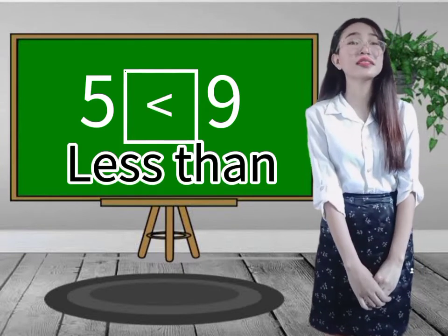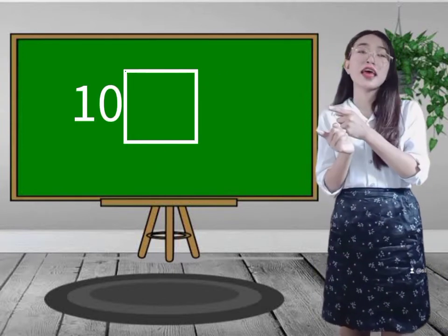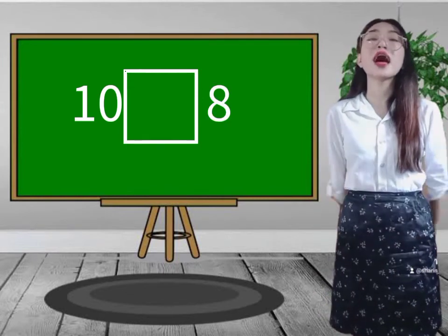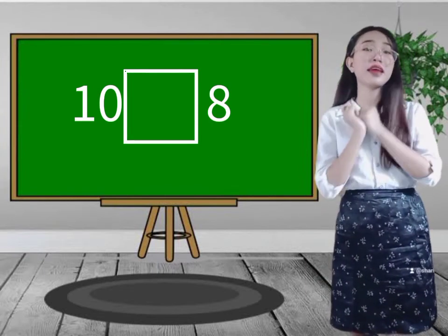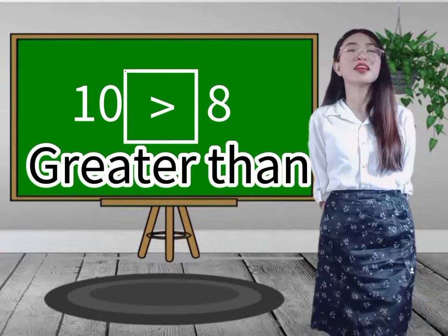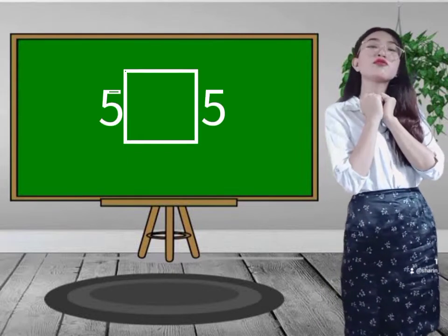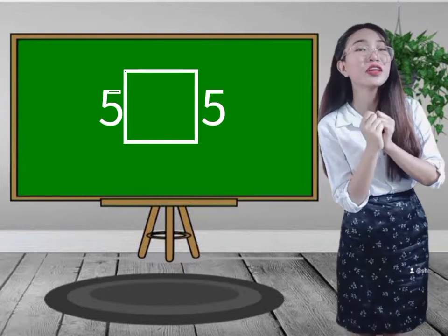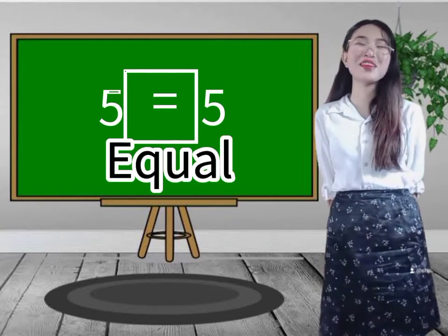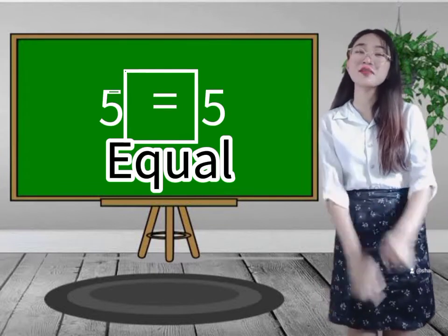Very good. So if I will compare five and nine, what symbol will I use? Very good — it is less than. How about if I will compare 10 and 8? It is greater than. How about 5 and 5? Very good, it is equal because they have the same number.